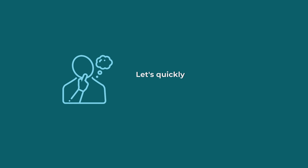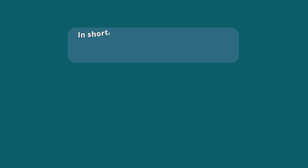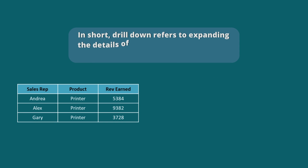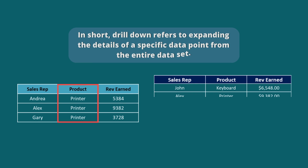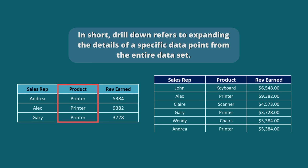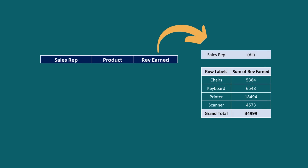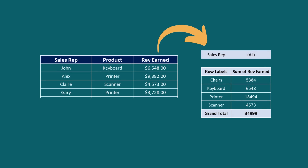Let's quickly refresh our idea about the drill down. In short, drill down refers to expanding the details of a specific data point from the entire data set. It is useful if you want to get more detailed data from the whole data set.